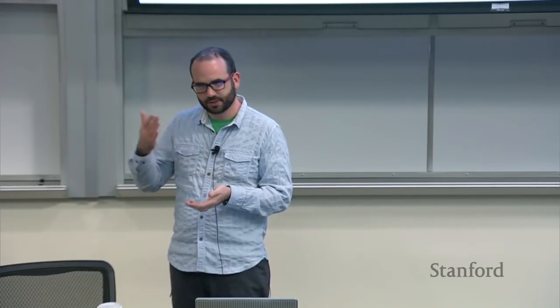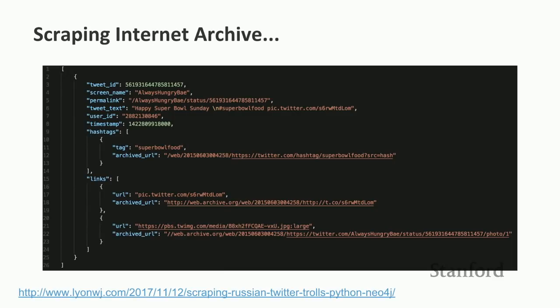The folks at NBC reached out to us and we started looking at how we might be able to piece together some of this data. One of the first things we did was look at the Internet Archive, which caches lots of websites. They have an API, so it was pretty easy to write a script to go through each screen name, check if their Twitter profile page was ever cached by Internet Archive, and if so, scrape that HTML to grab the tweet information.